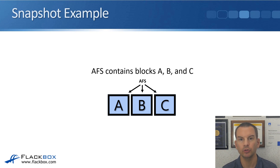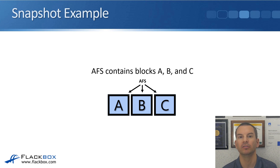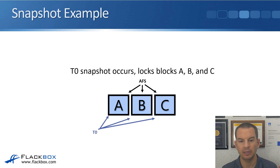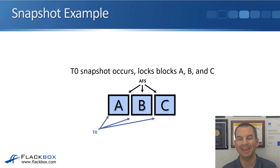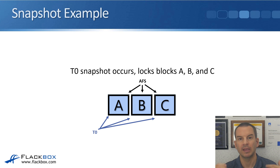Here we have a volume with data written to it — it contains blocks A, B, and C. That is the active file system right now. Then we take a snapshot of the volume — our T0 snapshot — which locks blocks A, B, and C. The snapshot just consists of pointers to what was in the active file system at the exact time the snapshot was taken.